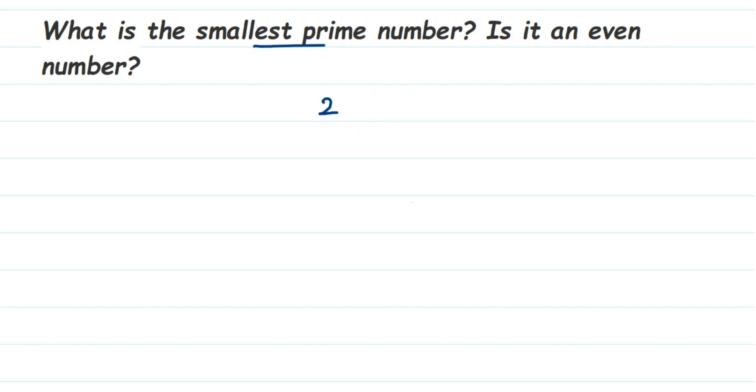Now let's see how many factors 2 has. 2 goes in the one table and 2 goes in its own table. So total, it has two factors: 1 and 2. This means it is a prime number. It is the smallest prime number. They're asking, is it an even number?